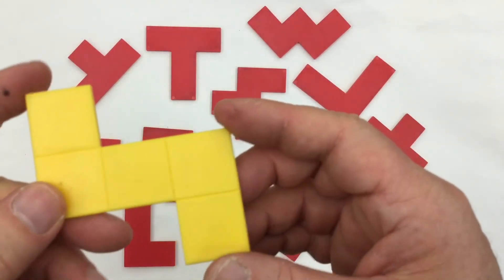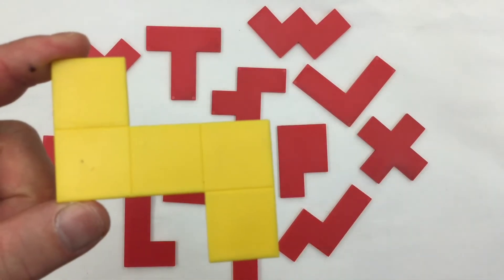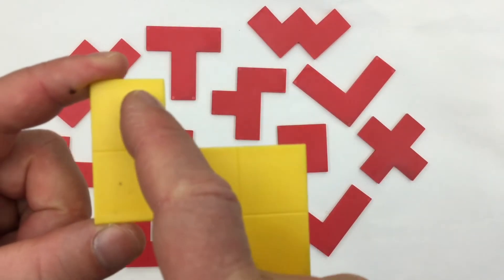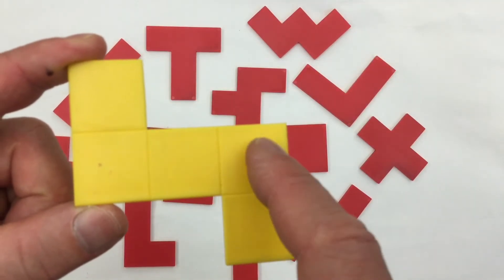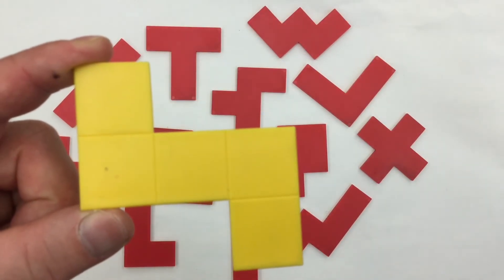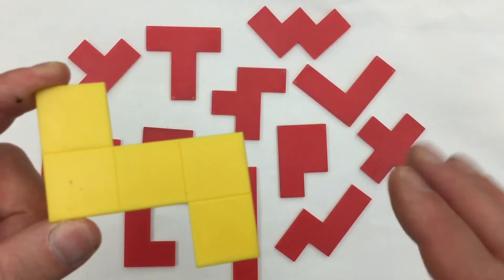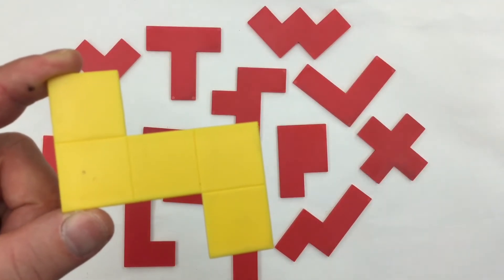If you look carefully at this pentomino, you can see the squares marked out on it: one, two, three, four, five. Each pentomino is made of exactly five squares.